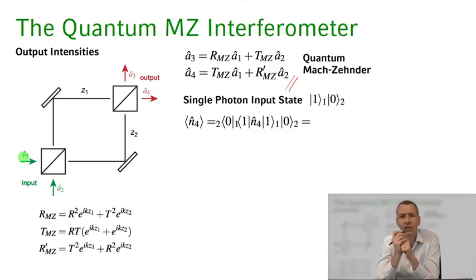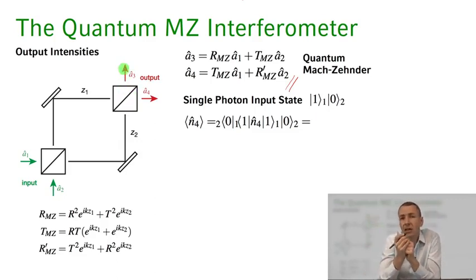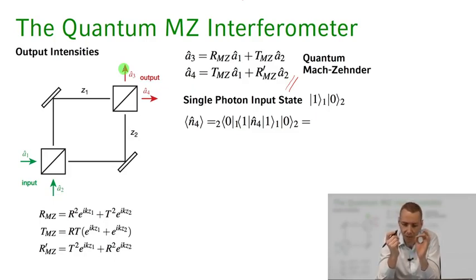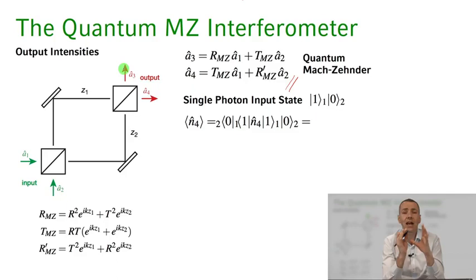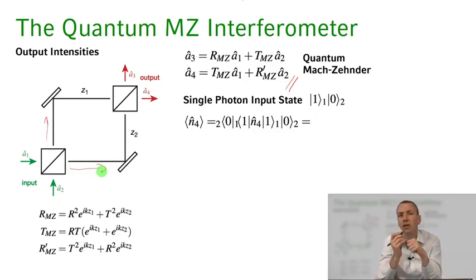One might say that the single photon will have to decide whether it propagates along the upper or lower path, and then on the final beam splitter there is a 50% chance of coming out at each port, suggesting no interference. But actually there is interference even for a single photon impinging on the Mach-Zehnder interferometer—and that's quite remarkable. From the last class on the beam splitter, we know that putting a single photon on a beam splitter creates an entangled state where the photon is in an equal superposition of the upper and lower propagation paths, which allows interference effects.